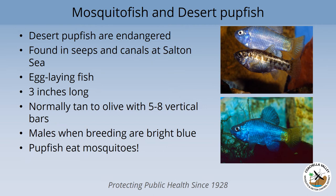One of the animals that we also know is in our habitat here and is very endangered is the desert pupfish. They are found in the seeps and the canals along the Salton Sea. They are an egg-laying fish, about three inches long, normally tan to olive with five to eight vertical bars you can see on the top picture. The males will be bright blue when it's the breeding season. One of the very cool things about desert pupfish is that they're gorgeous to look at, but they also do eat mosquitoes. So where they already are, they're a great benefit to our work — we wouldn't have mosquitoes in the same habitats.